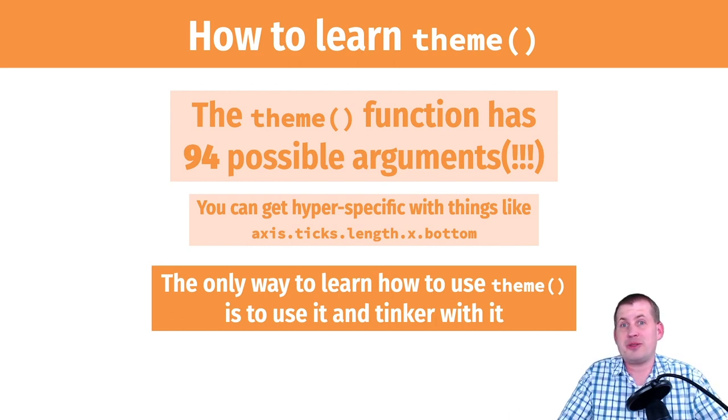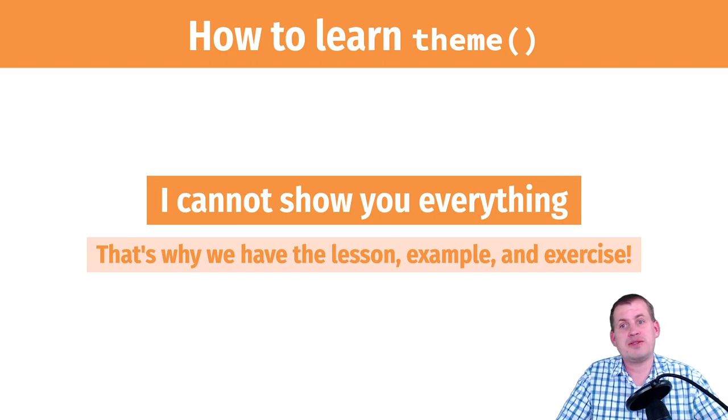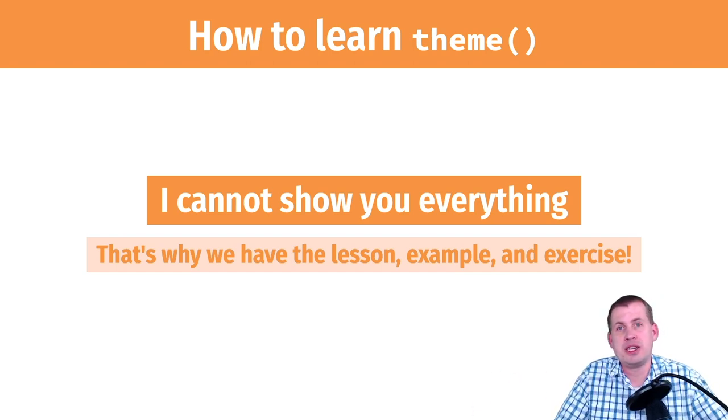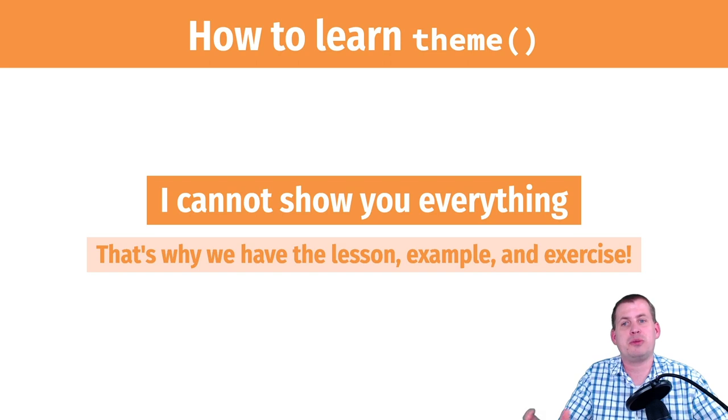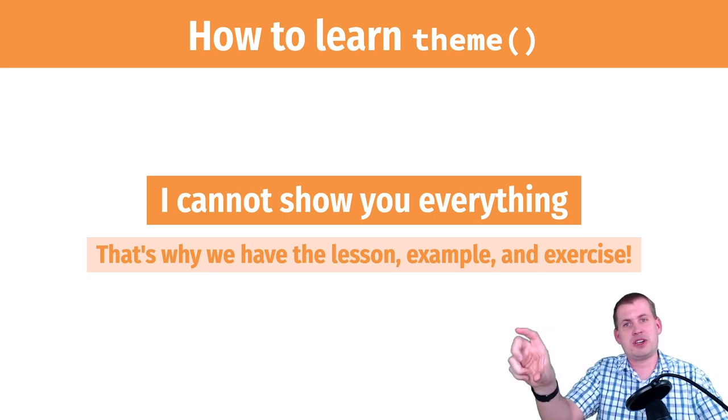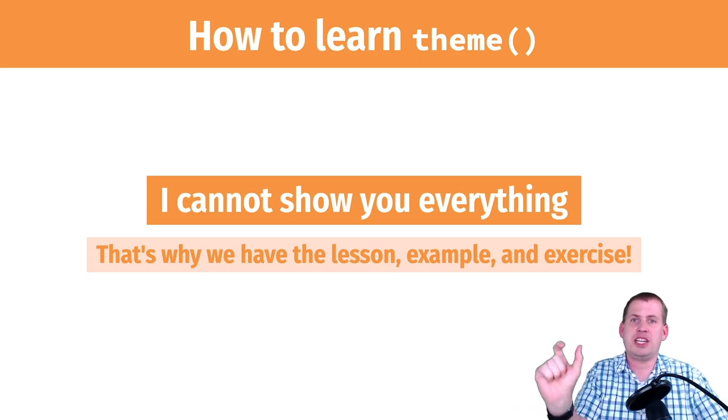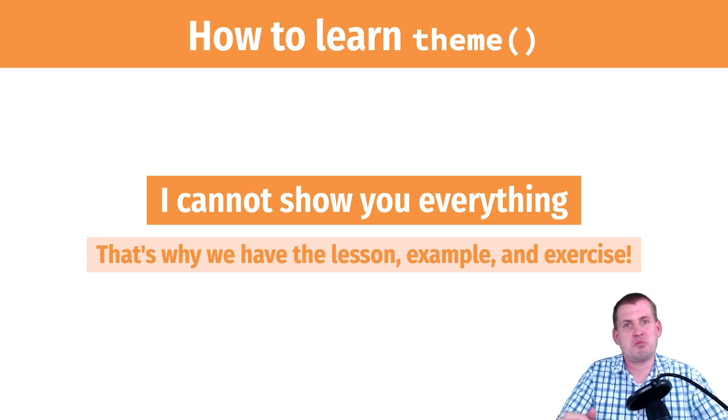For the rest of this session, the whole point of the lesson, example, and exercise you're going to be doing is to give you practice making changes to the theme function and changing how your plot looks. So go ahead and get started, head over to the lesson page. You're not going to be an expert, you're not going to memorize all 94 arguments, but you should start getting a handle on being able to target a part of the plot and change it. So go get started, good luck.